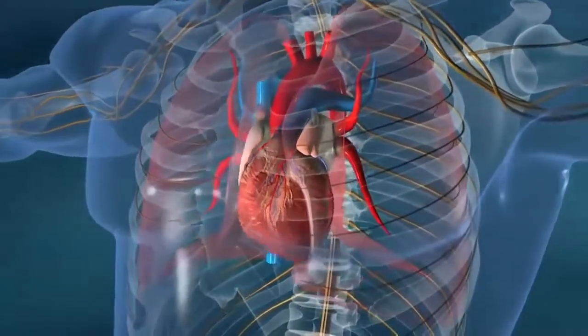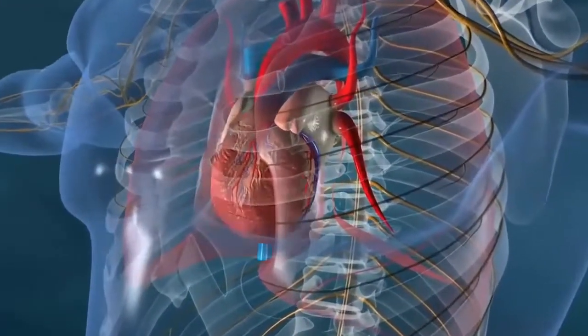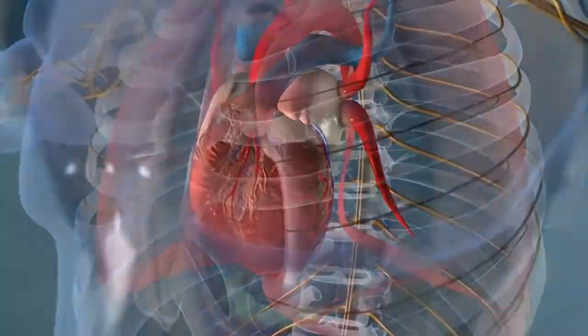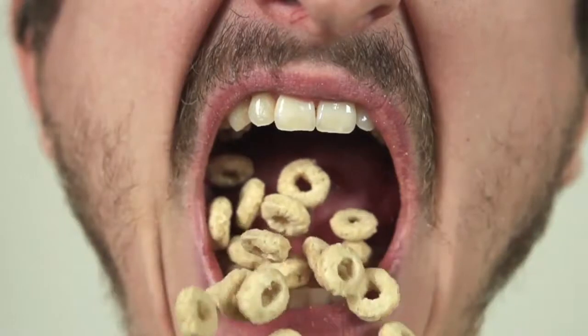Number 16. The heart beats 35 million times a year. Yes, 35 million a year. Number 17. Boys have fewer taste buds on the surface of their tongues than girls do.